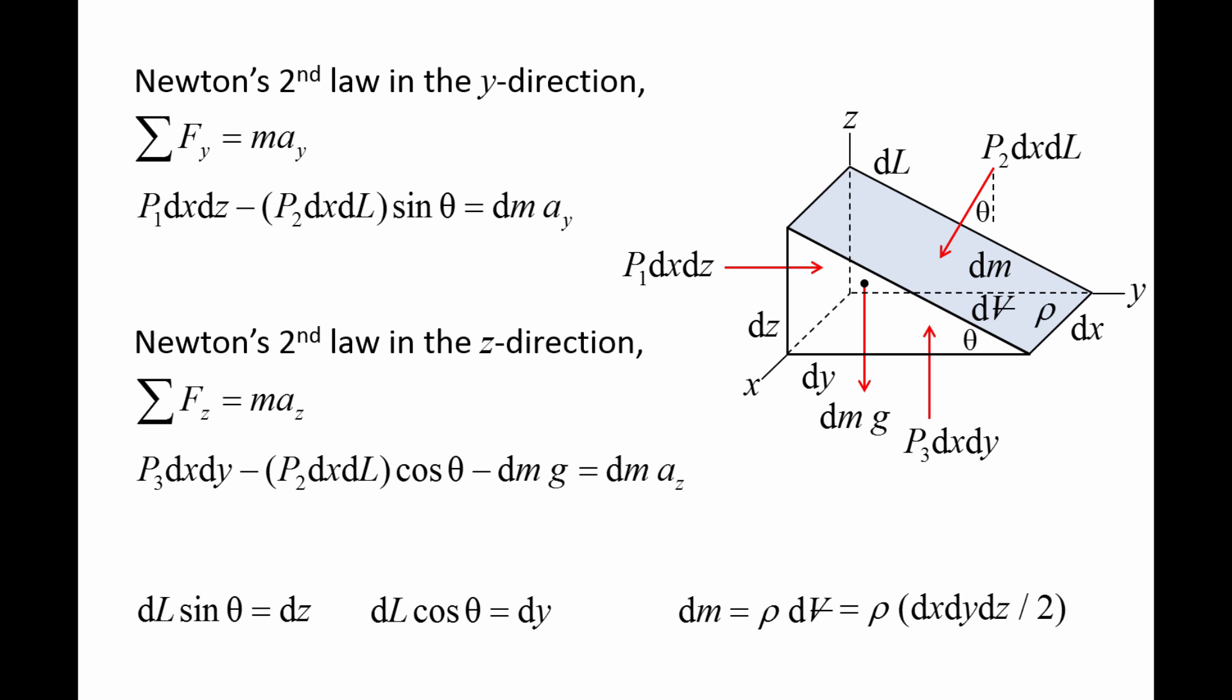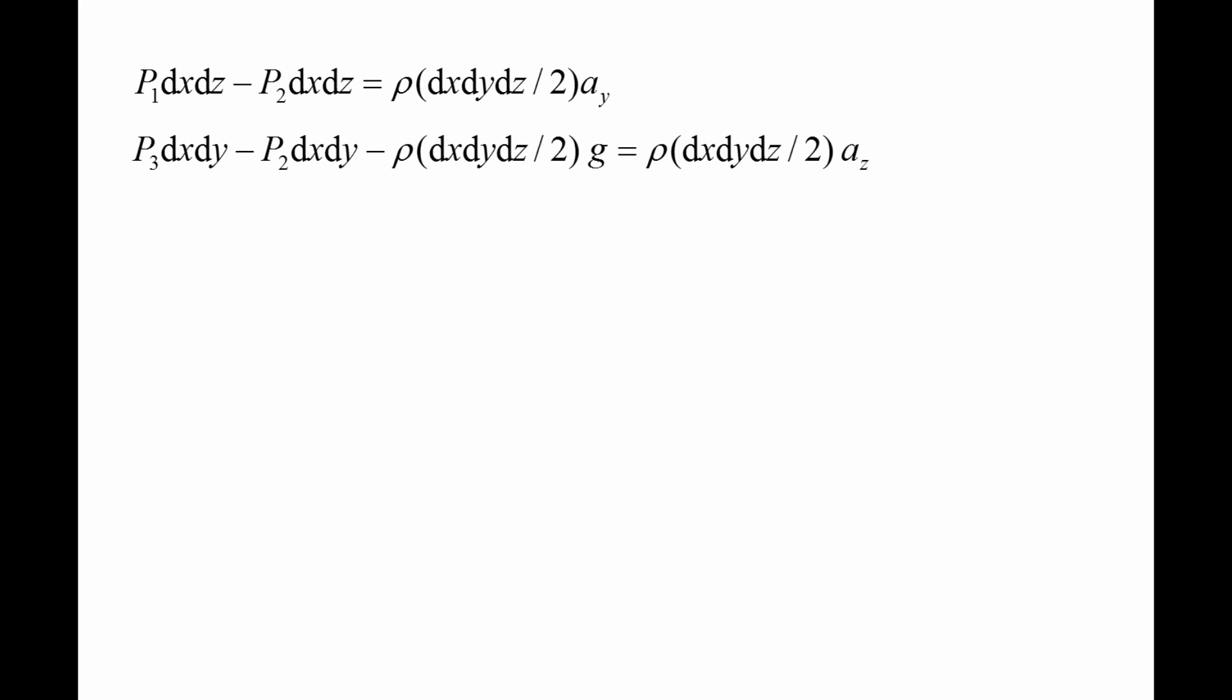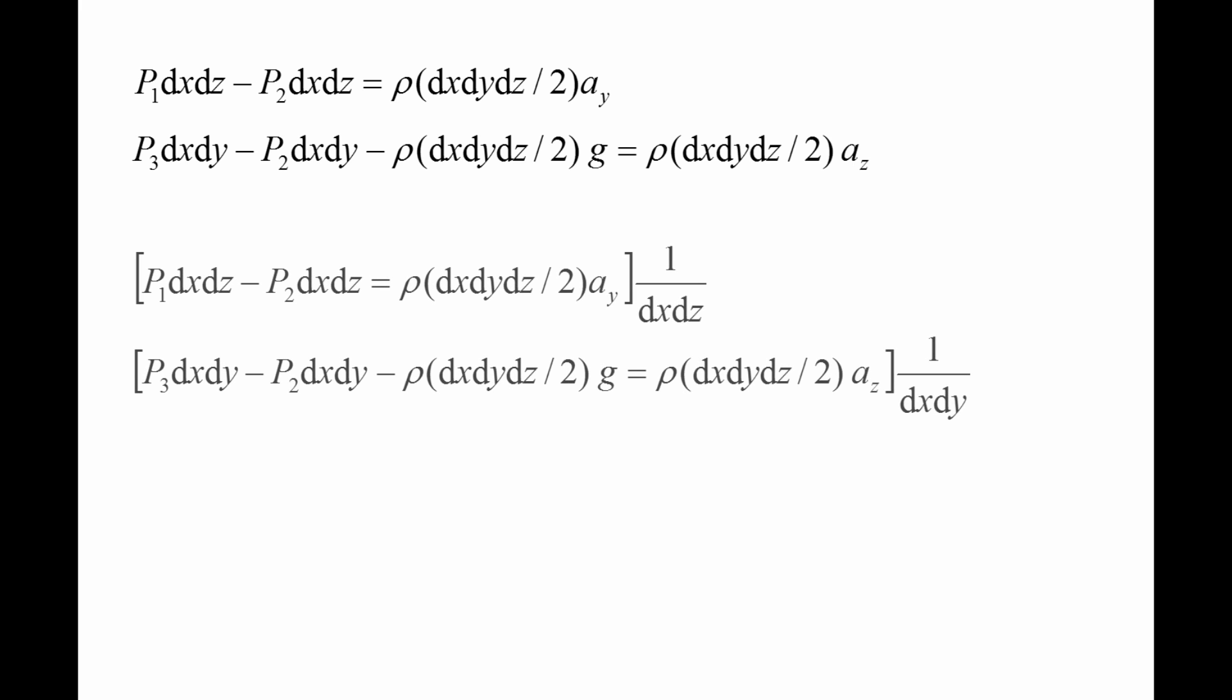The volume of a triangular prism is equal to one-half the volume of a rectangular prism. Divide the first equation by dx dz and divide the second equation by dx dy.